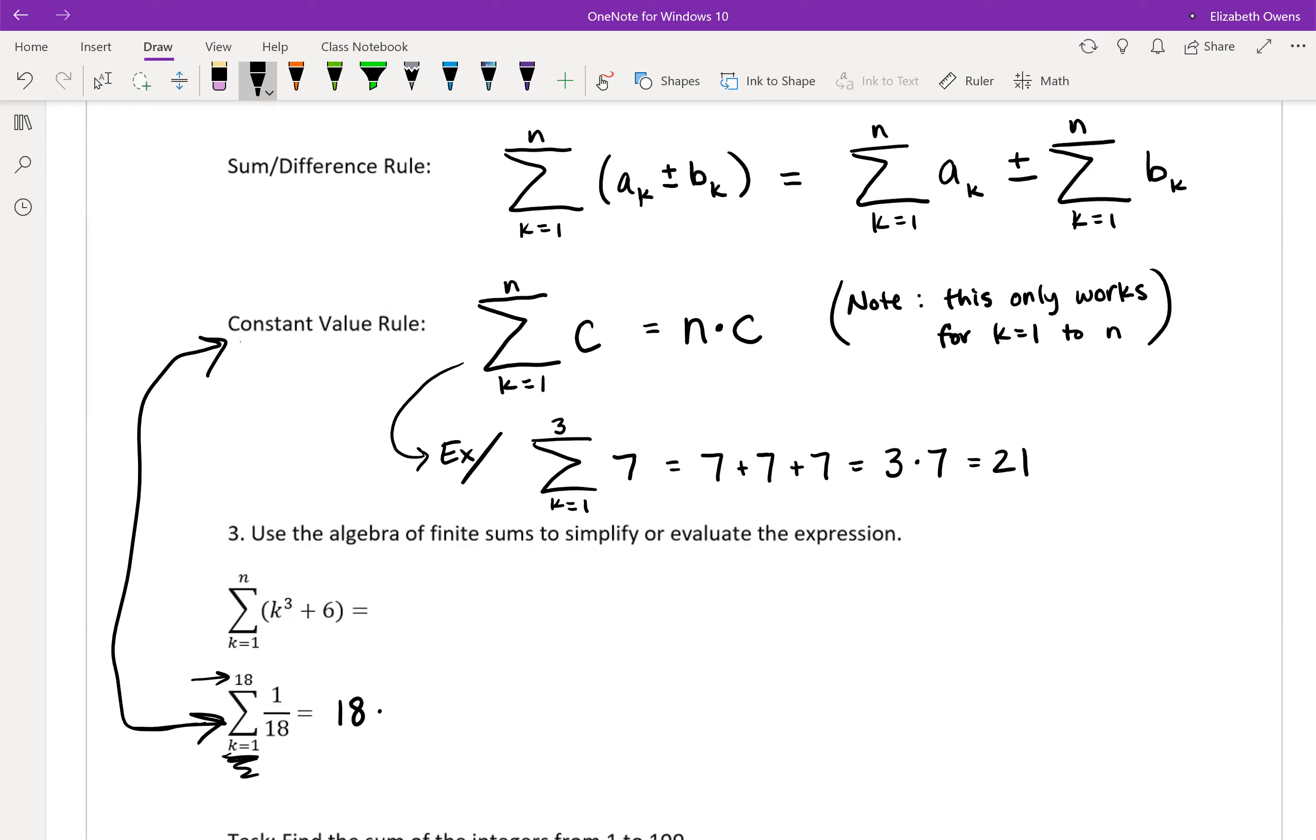So we're going to just have n times c here, or 18 times our constant, 1/18. And you would just get a value of 1 for this entire summation there.